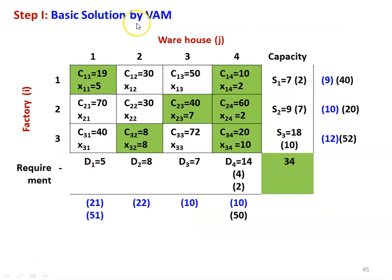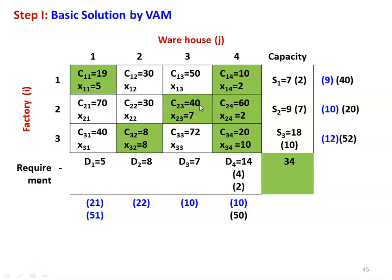Now we calculate the basic feasible solution using Vogel's Approximation Method. In this method, we find the difference between the lowest and the next lowest value in each row and column. In the first row, the lowest cost value is 10, the next lowest is 19, difference is 9. In the second row, the lowest value is 30, the next lowest is 40, difference is 10. In the third row, the lowest value is 8, the next lowest is 20, difference is 12.